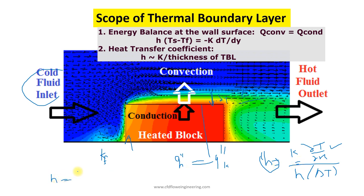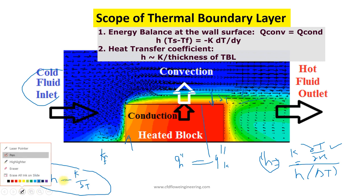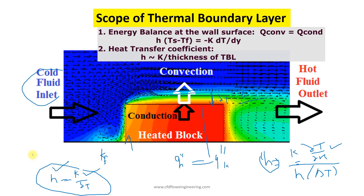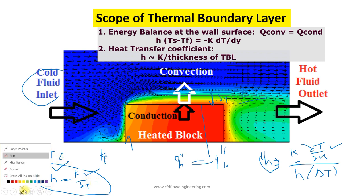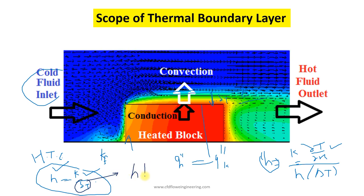We get that heat transfer is equal to k divided by the thickness of the thermal boundary layer. This correlation we get based on scaling analysis. As per scaling analysis, higher is the conductivity of the fluid, then more is the convective heat transfer coefficient. And more is the thickness of the thermal boundary layer, the lower will be the heat transfer coefficient. This we will understand in this lecture using CFD modeling of thermal boundary layer.